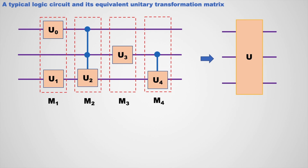Now here I am presenting a typical logic circuit, where you can see some operational blocks connected in a particular manner. This is the equivalent block of this logic circuit. This block obviously has a unitary matrix which gives an equivalent result of this logical circuit. That means, if you give some data as input, you will get the same output after operation as this entire circuit.